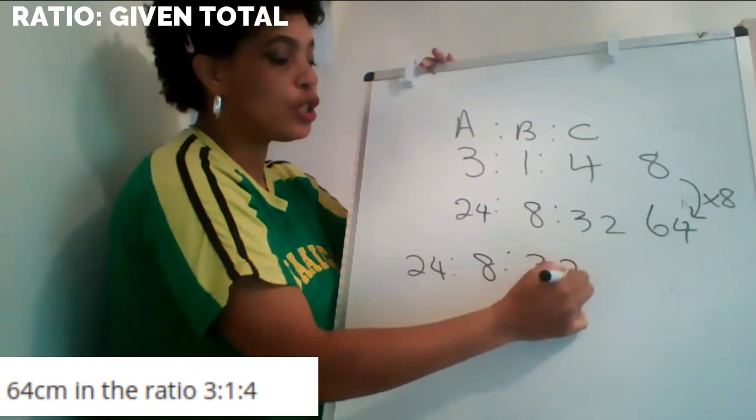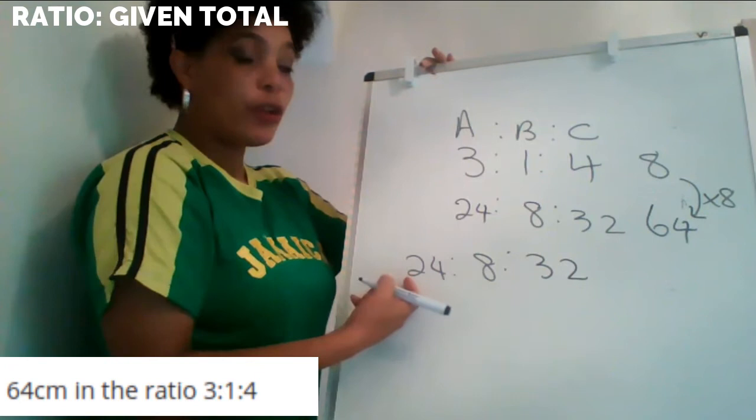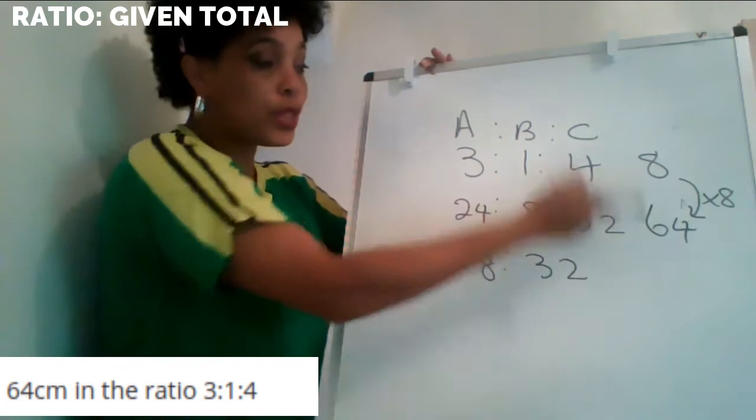If you notice, if I add 32 and eight, I get 40. And 40 plus 24 gives me back my 64. So that's how I would do that question.